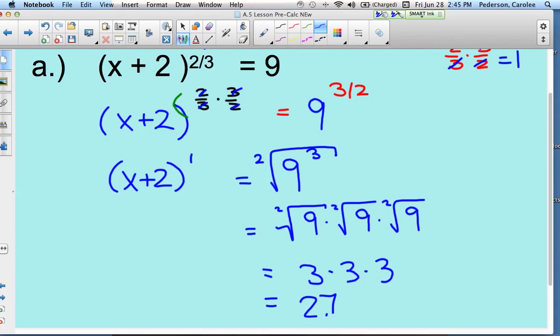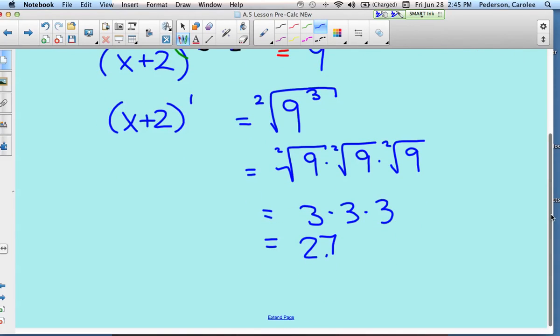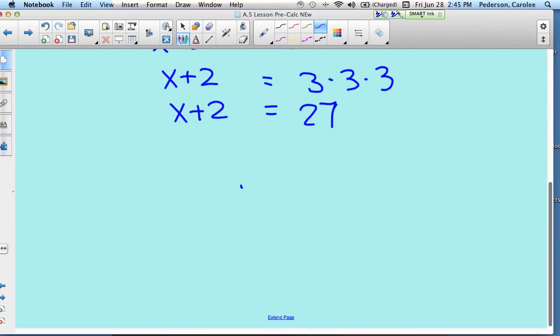On the left side, I really haven't done anything with it besides canceling out that fraction. So I have x plus two to the one - x plus two. So now we just need to finish up by subtracting two from both sides. 27 minus two is 25. Again, you can check your answers on these.